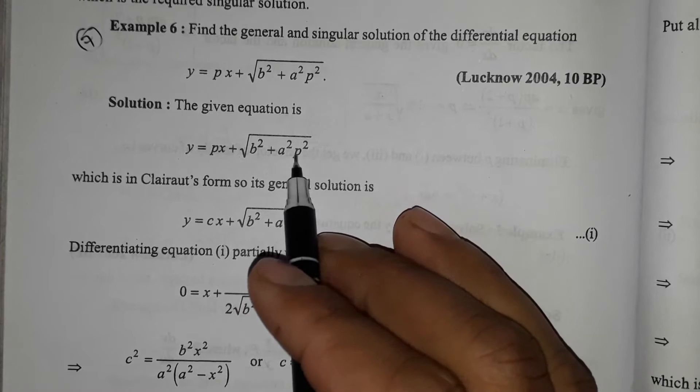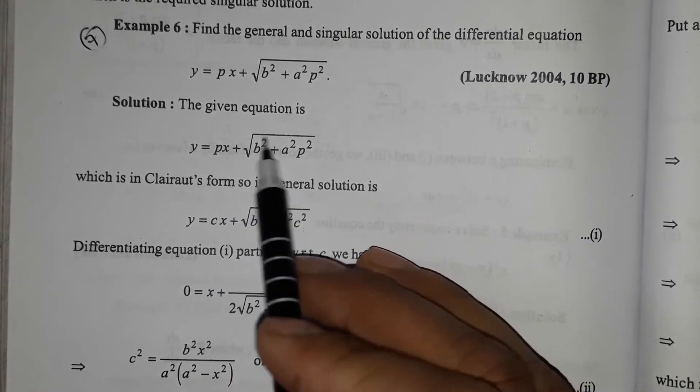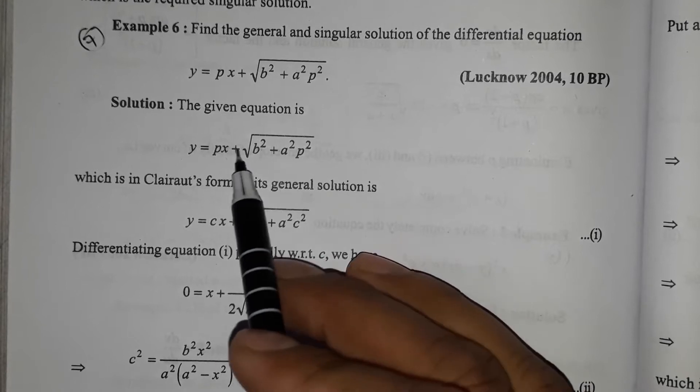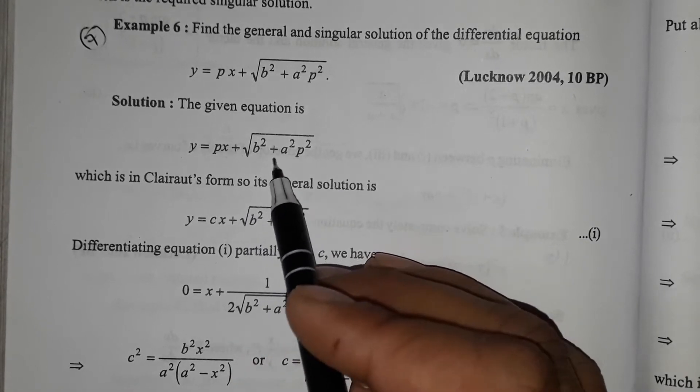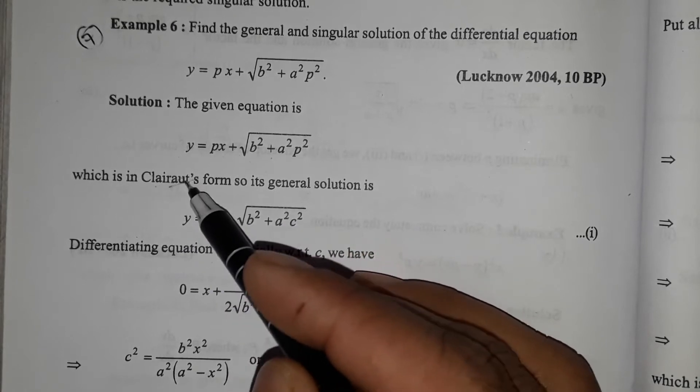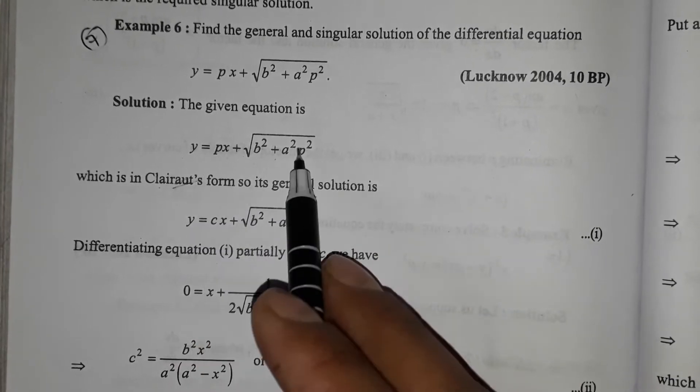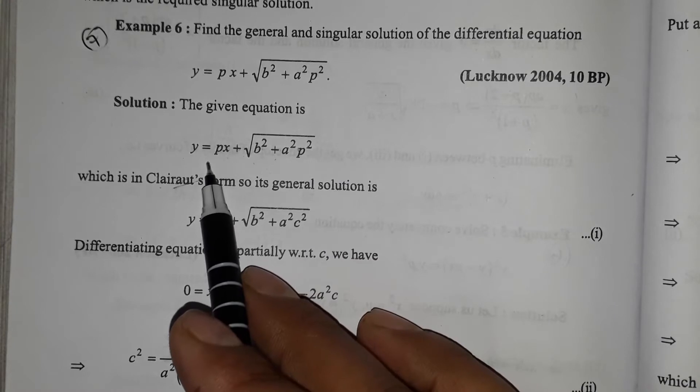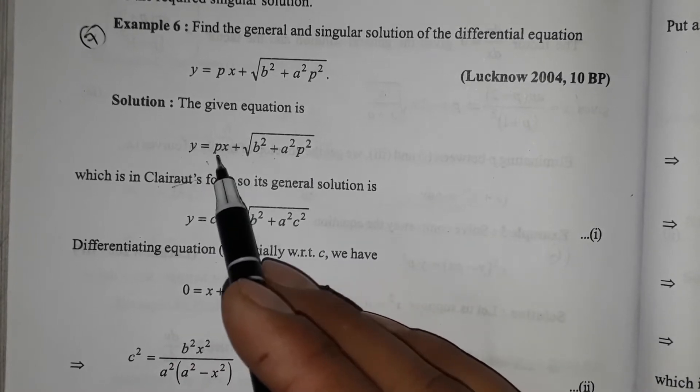This is y equals px plus f(p), which is in Clairaut's form. Here b and a are constants. So for the general solution, we replace p with c.